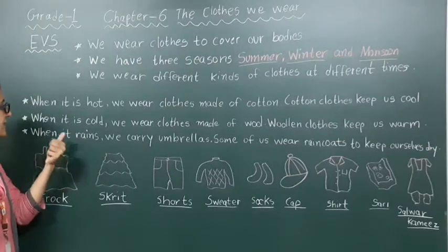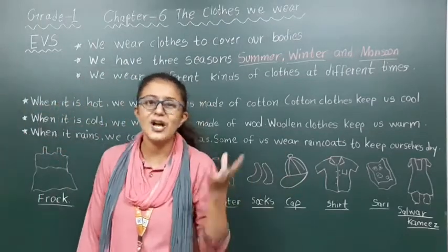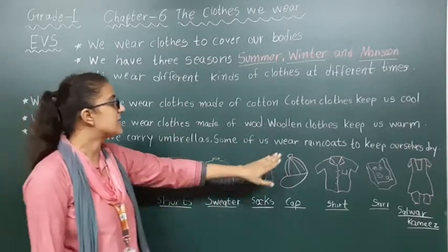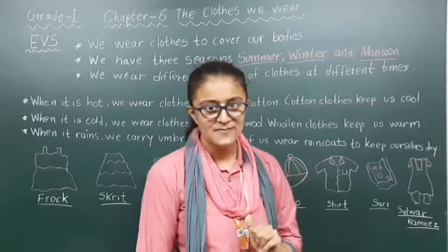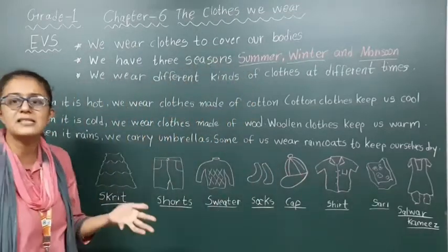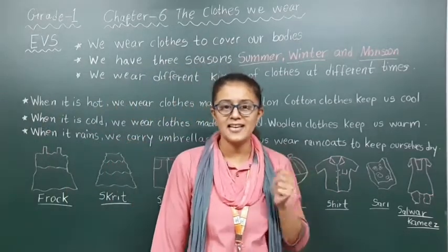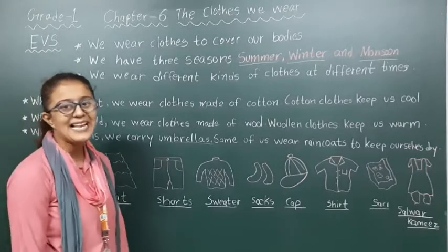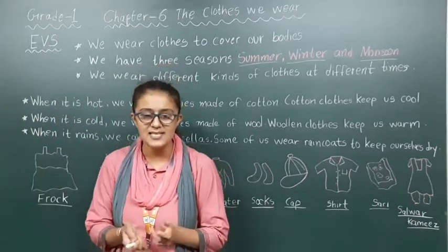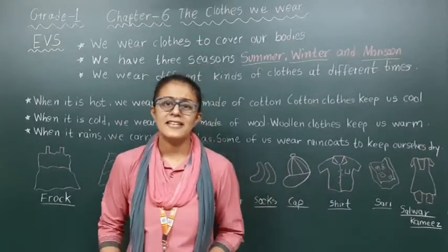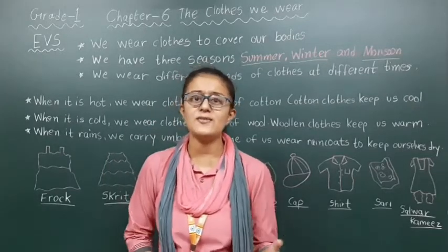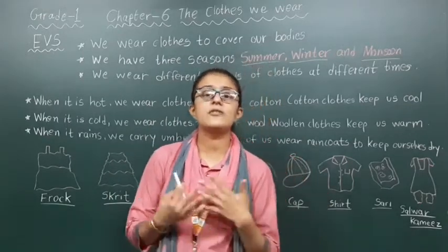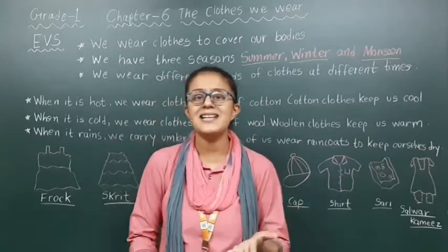When it rains — that is, in the monsoon season — we carry umbrellas. U-M-B-R-E-L-L-A — umbrella. Some of us also wear raincoats to keep ourselves dry. In the rainy season we carry both umbrella and raincoat with us so that we can stay dry. Raincoat and umbrella keep us dry.